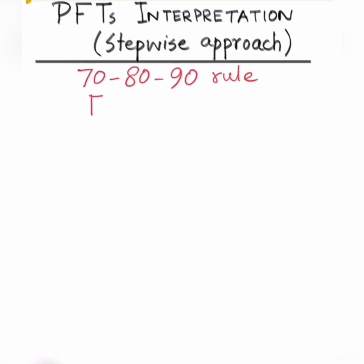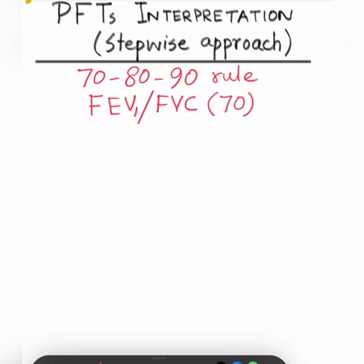The first step in any patient who has either obstructive or restrictive lung disease is the FEV1 — that is forced expiratory volume in the first second — over forced vital capacity. The number here is 70 as per our rule; that is the cutoff. If the FEV1 over FVC ratio is less than 70, it is likely obstruction.